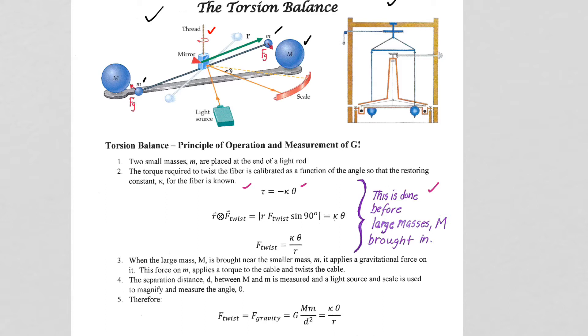So forget about the big M, this would be done before the big metal lead spheres were brought in. He would put known forces on the fiber to get it to twist small angles theta, because that calibration would allow him then to have a value for the torsion constant for that thread.